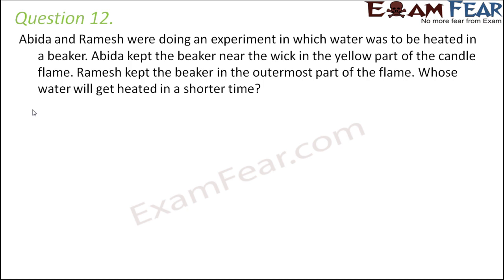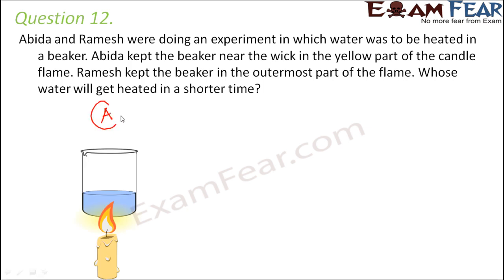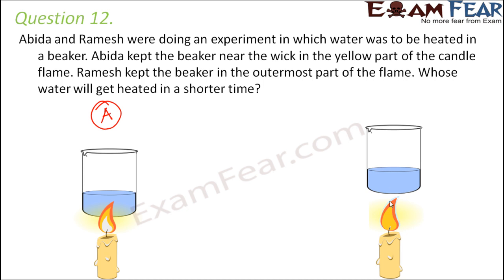Abeada kept a beaker with water near the wick in the yellow part of the candle flame. Ramesh kept his beaker in the outermost part of the flame — the bluish part. The question is: whose water will get heated in a shorter time?